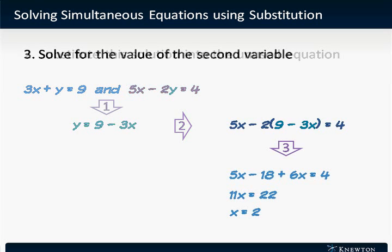The third step is to solve for the value of the second variable, in this case x. So we multiply this equation out to get 5x minus 18 plus 6x equals 4. 11x equals 22. Divide by 11 to get x equals 2. So we have the solution for one variable.